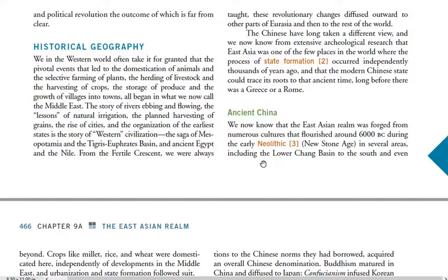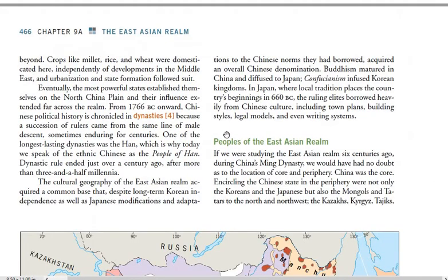Now let's talk briefly about the history of the East Asian realm. The East Asian realm is home to one of the oldest civilizations in the world — the Chinese civilization, considered the longest-reigning civilization up to this day. In the history of China, the term 'dynasty' is very prominent. A dynasty is a series of governments ruled by kings from one family; when that family ends another group rules and names a new dynasty. The most famous of Chinese dynasties was the Han Dynasty.